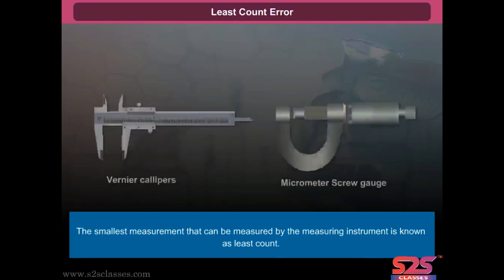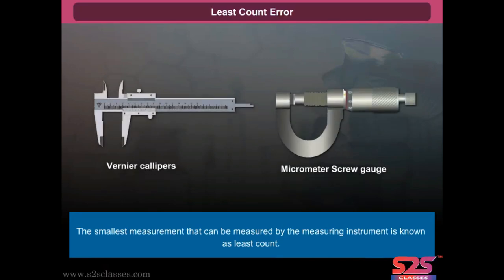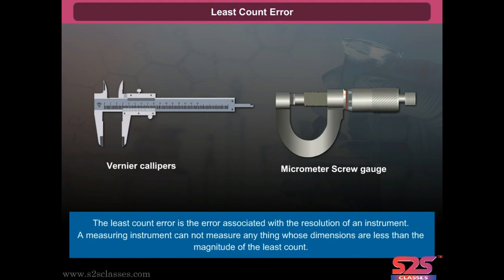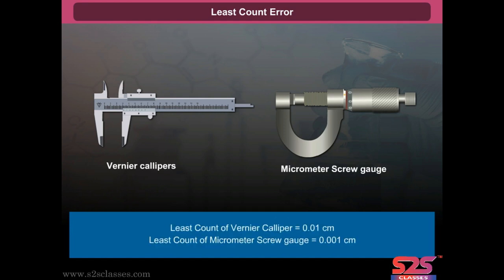The smallest measurement that can be measured by a measuring instrument is known as the least count. The least count error is the error associated with the resolution of an instrument. A measuring instrument cannot measure anything whose dimensions are less than the magnitude of the least count. The least count of a vernier caliper is 0.01 cm, and the least count of a micrometer screw gauge is 0.001 cm.